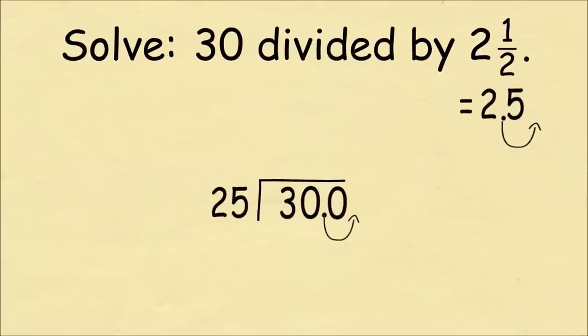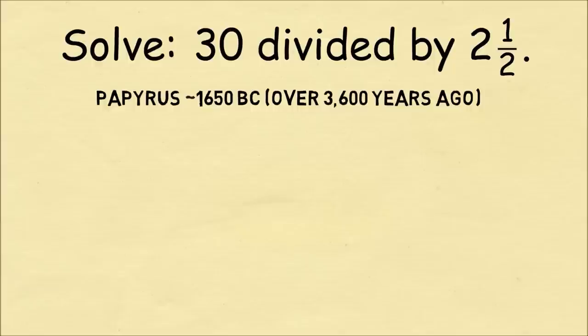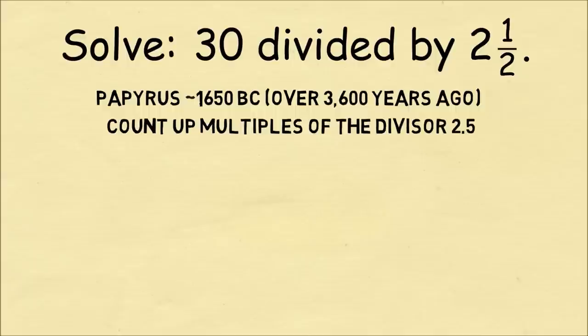Let's return to our problem and forget everything that you've learned in school. I'm going to teach you how the ancient Egyptians did this around 1650 BC, which was over 3,600 years ago. This problem is documented on a papyrus, and the method they use is they counted up multiples of the divisor 2 and a half.